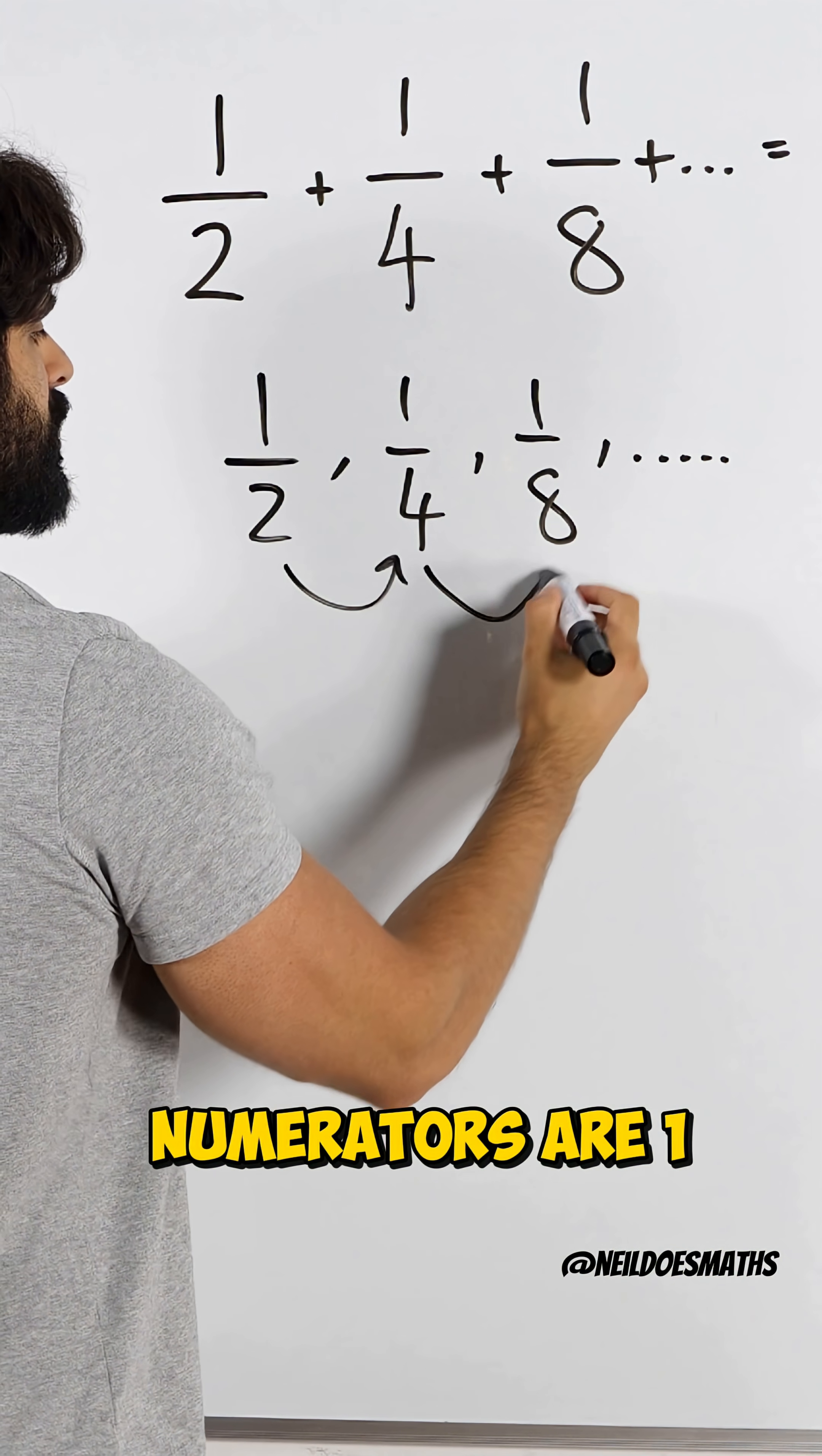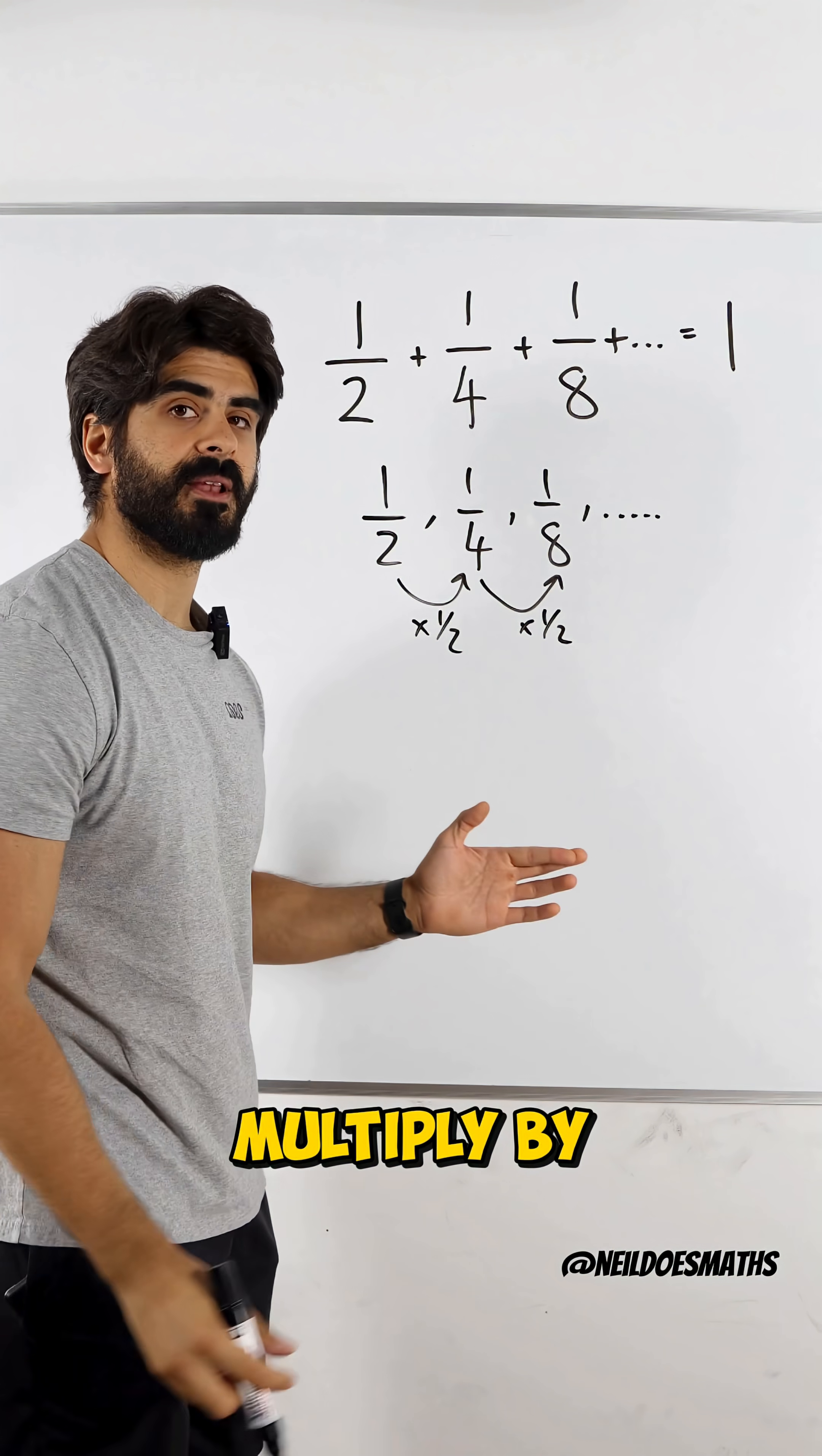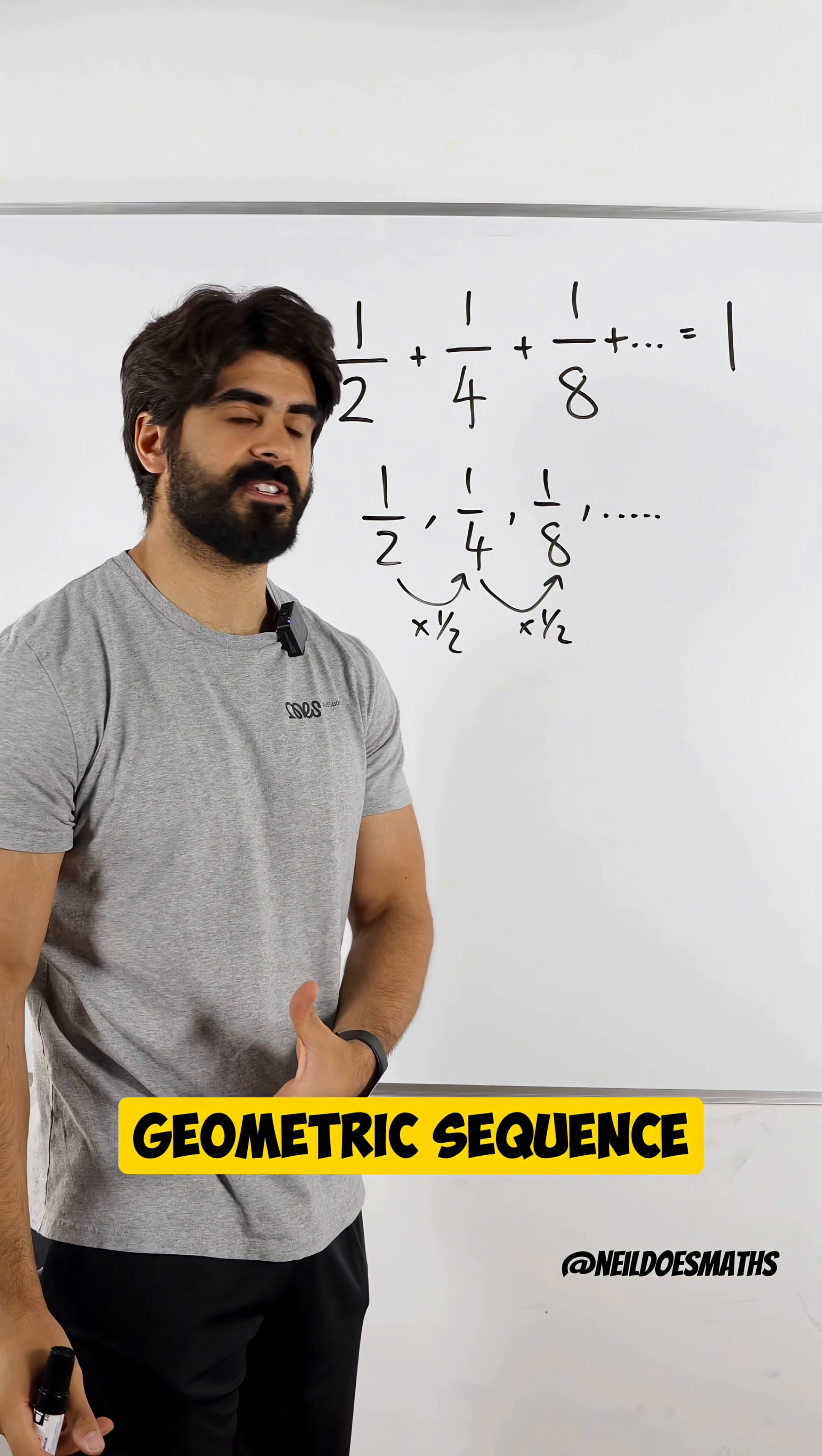But since all the numerators are one, you're actually multiplying by a half. And when you multiply by a constant, this is known as a geometric sequence.